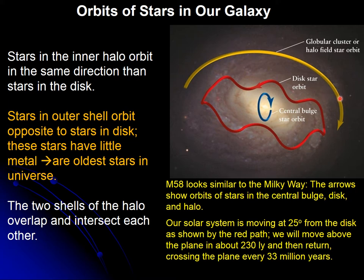The stars in the inner halo are moving in the opposite direction to the stars in the disk. The stars in the outer shell have very little metal, so they are supposed to be primordial stars from many years ago — they are much older than the stars in the disk, which have more metallicity.